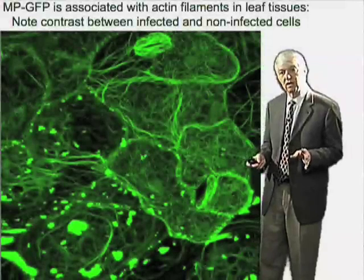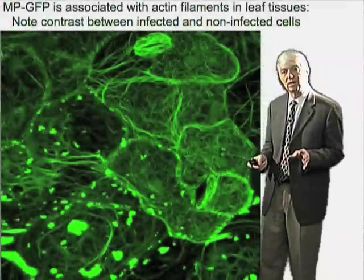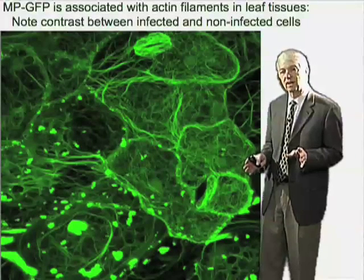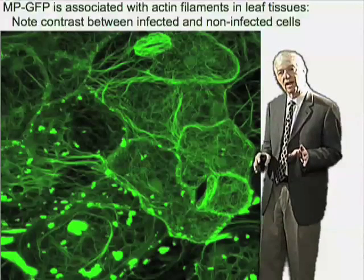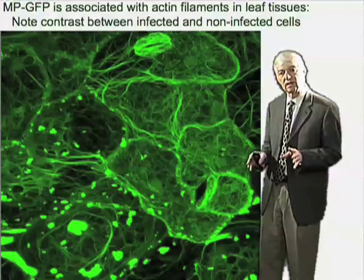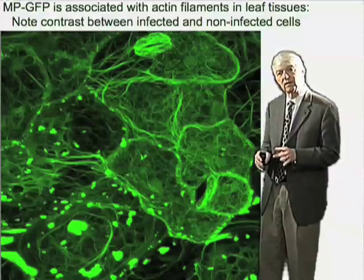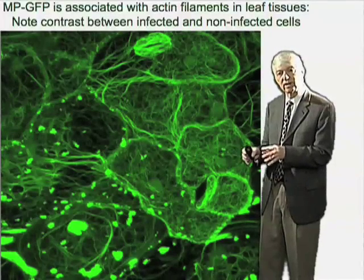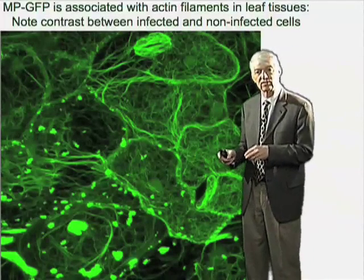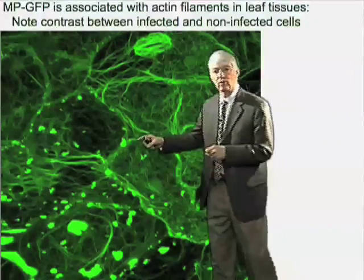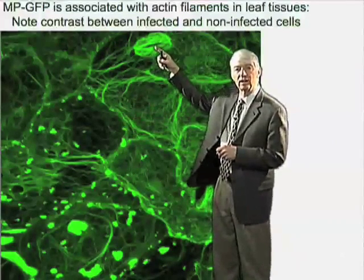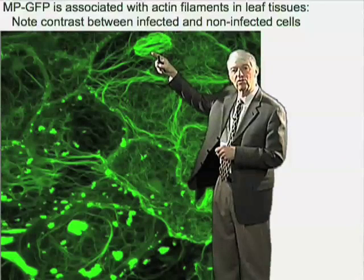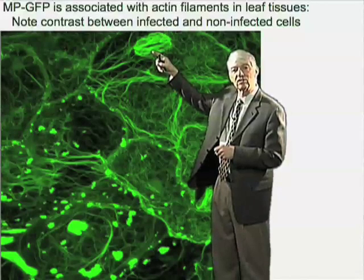What we see here is an image of an infected plant leaf. This is a transgenic plant in which the actin is labeled with talon. You can see the fluorescence of the actin cytoskeleton. Up here, you can see the location of a stomata, the holes through which oxygen enters and gaseous exchange occurs.